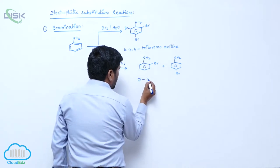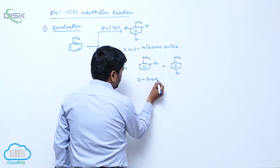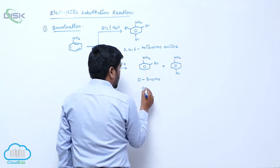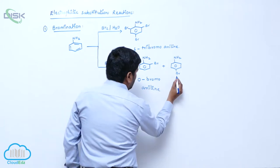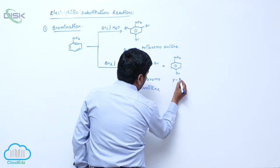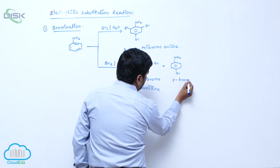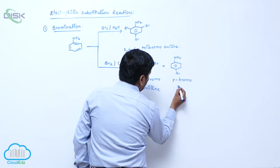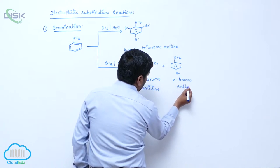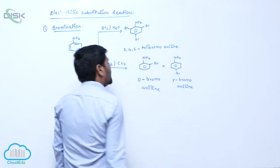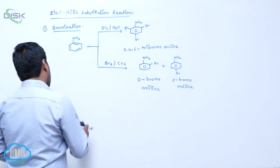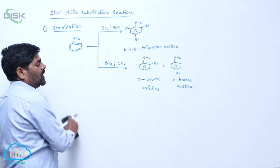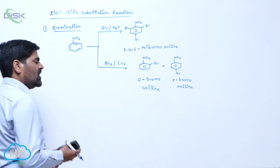This is orthobromoaniline, this is parabromoaniline. But to get more yield of ortho and para product, first the amino group is protected by acylation process.